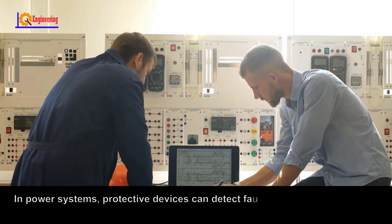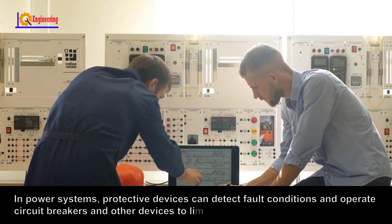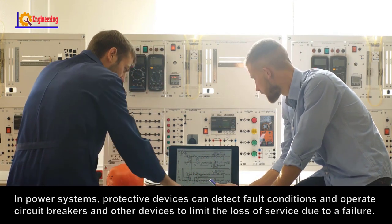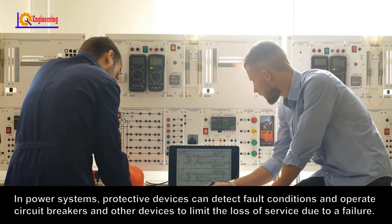In power systems, protective devices can detect fault conditions and operate circuit breakers and other devices to limit the loss of service due to a failure.